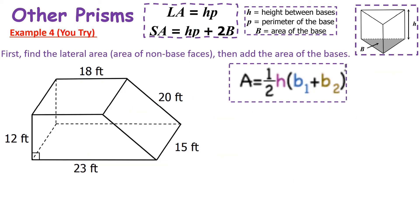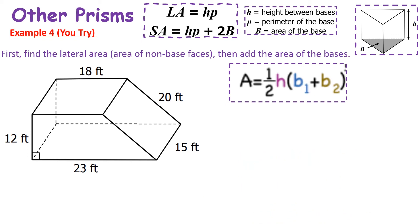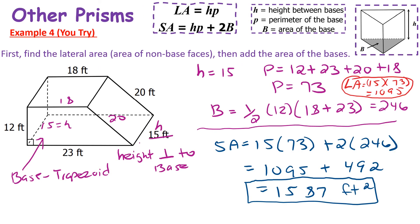Here's a problem I'd like for you to try on your own. I've given you an extra formula to help find the base, so go ahead and pause the video. The lateral area is 1095 and the surface area is 1587 square feet. This is a trapezoidal prism, which is why I gave you the formula for the area of a trapezoid — the bases are trapezoids. Hopefully you got it correct; if not, pause and analyze the work here.